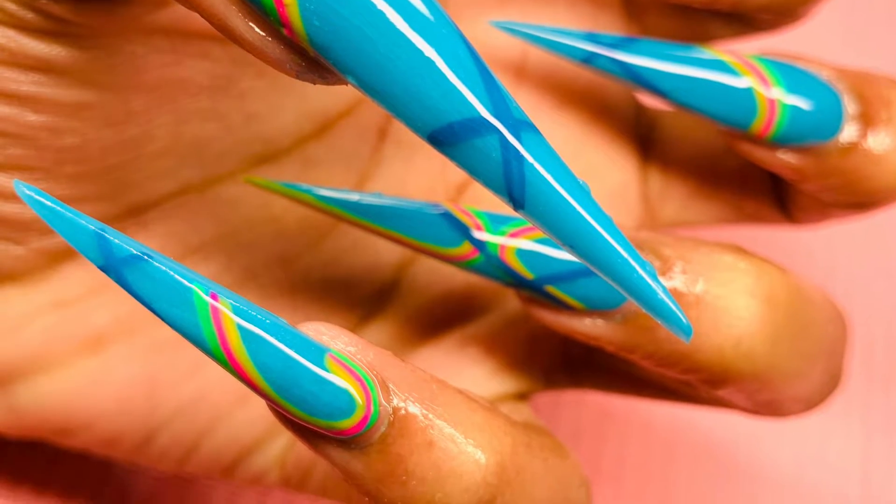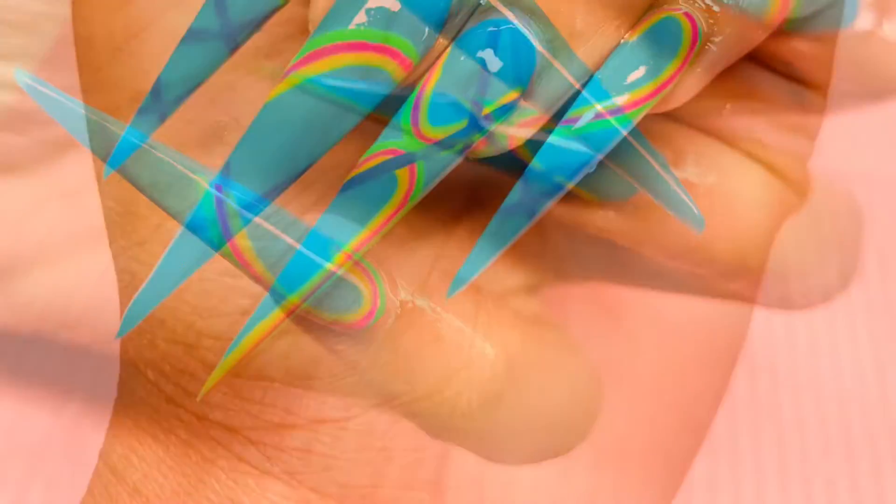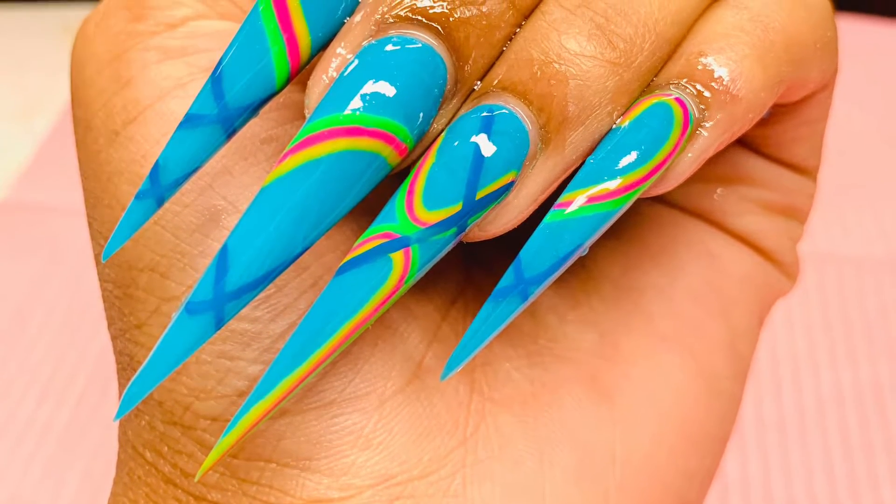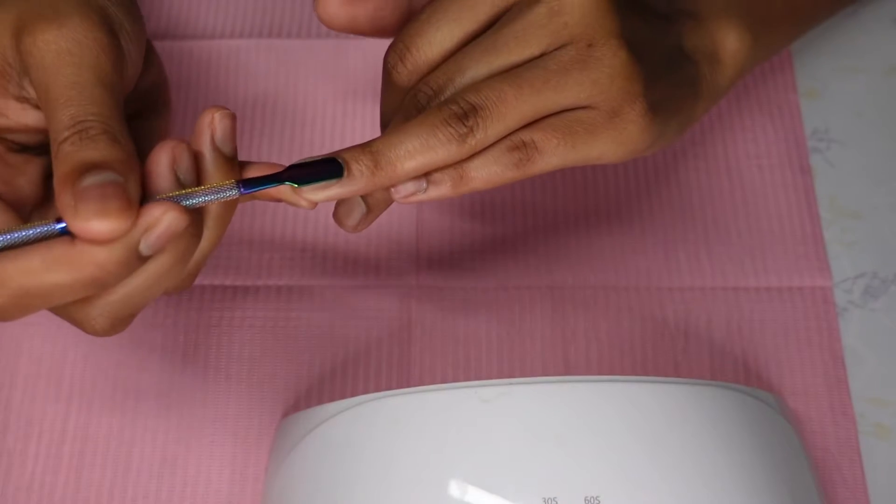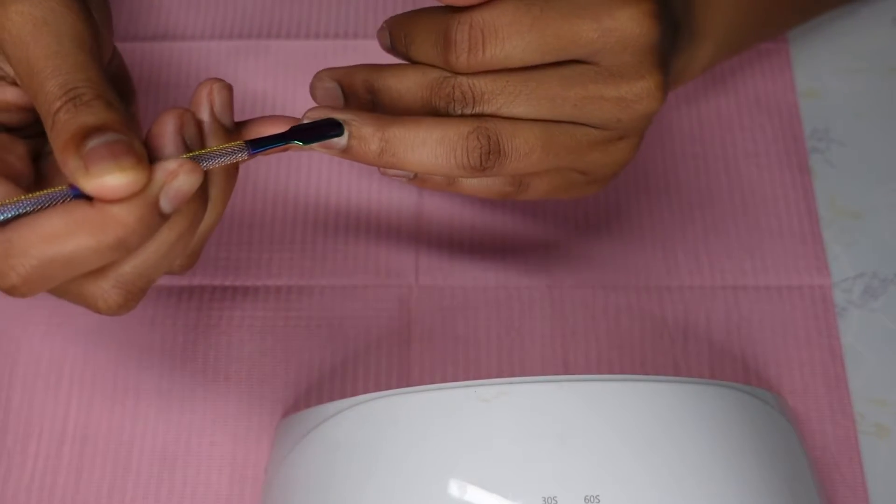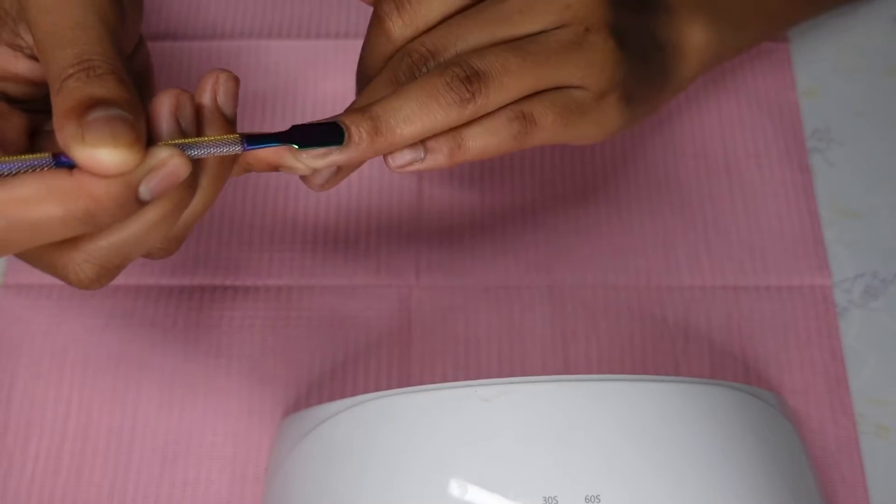Hey guys, if y'all want to see how I achieved this bomb stiletto look, just keep on watching. This is step one, per usual. You're just going to use your cuticle pusher to push back those cuticles and get all of that dead skin out of the way.